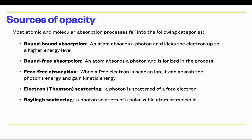There are many sources of opacity, most from atomic and molecular absorption processes. Bound-bound absorption involves a transition between two bound states — a photon is absorbed by an electron, which gets kicked to another bound state. Bound-free absorption is when the atom is ionized by the photon. Free-free absorption is when an electron near an ion absorbs a photon's energy. Electron or Thomson scattering is another form of opacity, as is Rayleigh scattering from polarizable molecules or atoms.